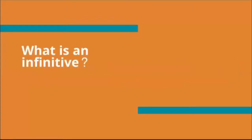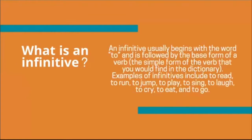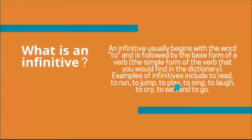Let's proceed to infinitive. When we say infinitive, it usually begins with the word 'to,' and it's followed by the base form of a verb — the simple form you would find in the dictionary. Examples of infinitives include: to read, to run, to jump, to play, to sing, to laugh, to cry, to eat, and to go. These are verbs on their own, but when you add the word 'to,' they become an infinitive.